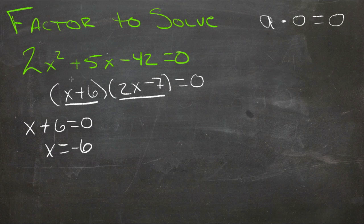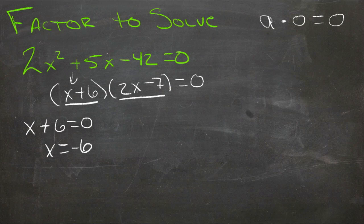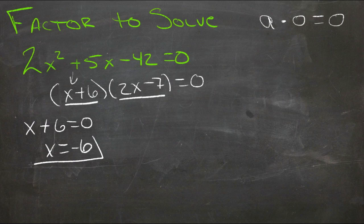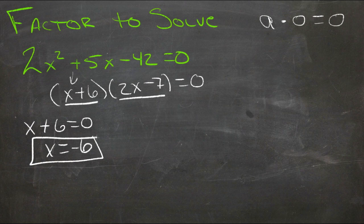If we were to plug negative 6 in for x, we'd get negative 6 plus 6 is zero. Two times negative 6 is negative 12, minus 7 is negative 19, but zero times negative 19 is zero. So x equals negative 6 is one solution for this equation.